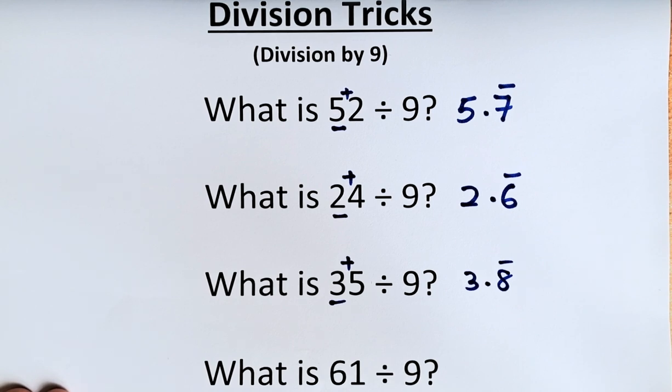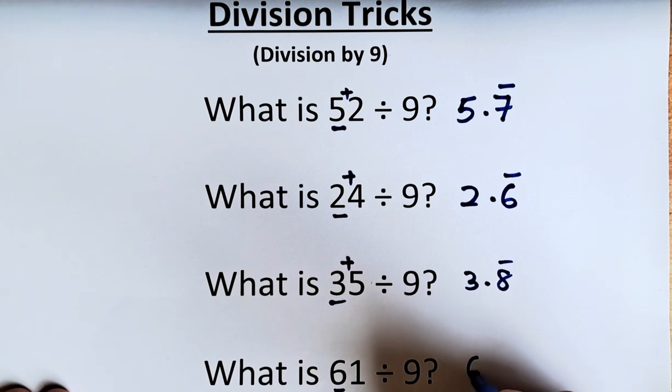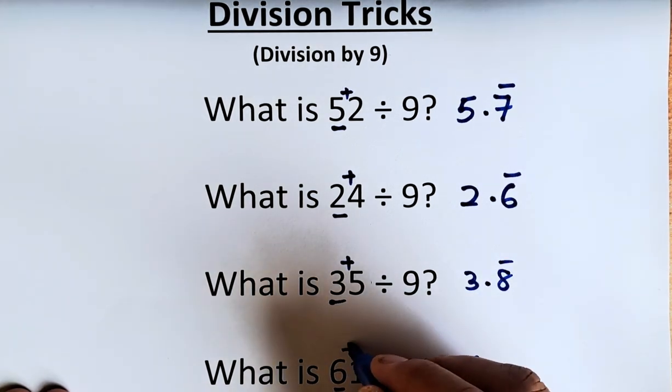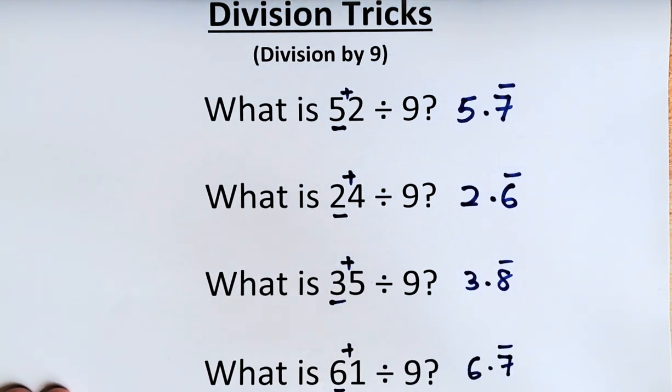And last but not least, we have 61 divided by 9. 6 remains. So it remains 6 point. And then 6 plus 1 is going to be 7. So it's going to be 6.7 recurring.